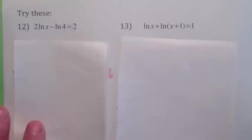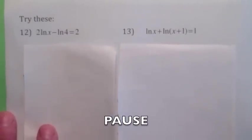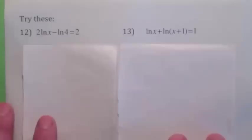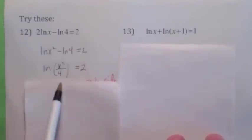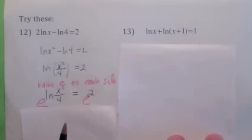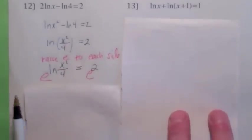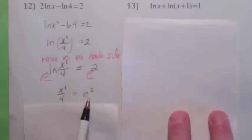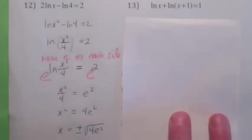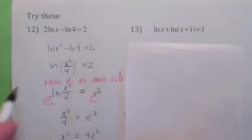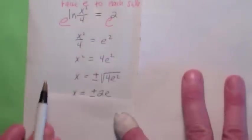Go ahead and hit pause and try the practice problems. On the first one, move the exponent up — move that 2 up as a coefficient. Now combine the logarithms. Raise e to each side: the left side simplifies using the log rule, the right side is e squared. Multiply by 4. When you take the square root of both sides, you get x equals plus or minus 2e. But check the domain: x must be greater than 0, so the negative answer is excluded. The only solution is x equals 2e.